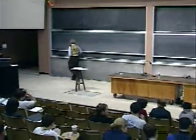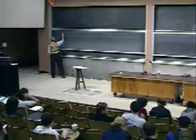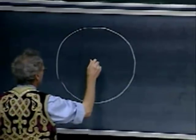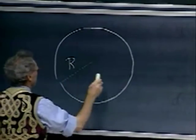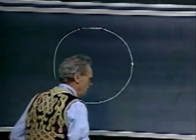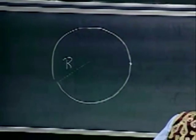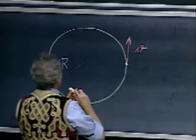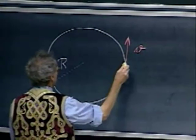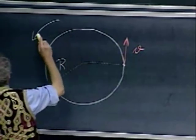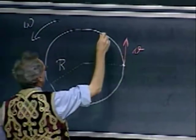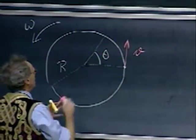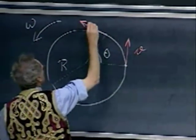Going back to rotating objects: I have an object here that has a certain velocity v, and it's going around with angular velocity omega. A little later the angle has increased by an amount theta, and then the velocity is here.